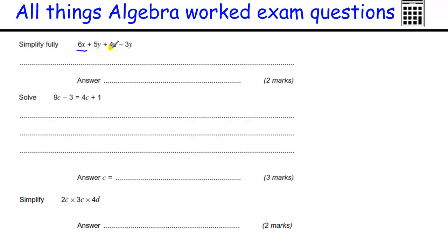Simplify this, so we've got 6X and 4X, that makes 10X. And then we've got 5Y minus 3Y. 5 take away 3 is 2Y.